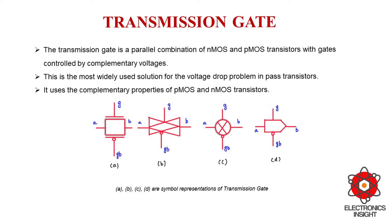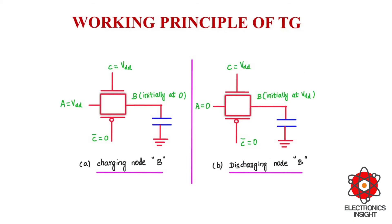Now let us understand the working principle of the transmission gate. The transmission gate acts as a bidirectional switch where the switching action is completely controlled by the gate signal, here denoted by C. When C is equal to VDD, or logic 1, both NMOS and PMOS pass transistors are driven by complementary control signals. Therefore when C equals VDD, C-bar becomes zero.